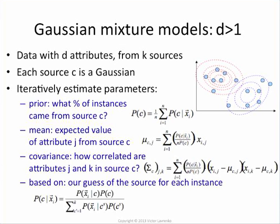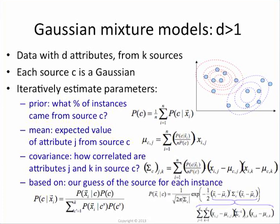For all of those, you need the weight. The weight is just the probability that the ith data point came from the Cth Gaussian in the mixture. And you get that with Bayes rule, and it's based on the normal distribution.